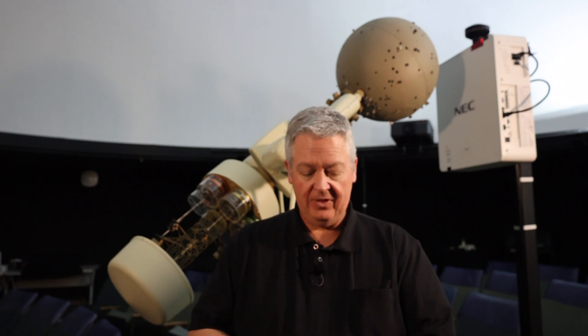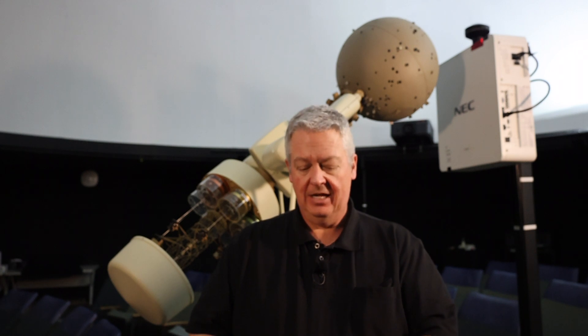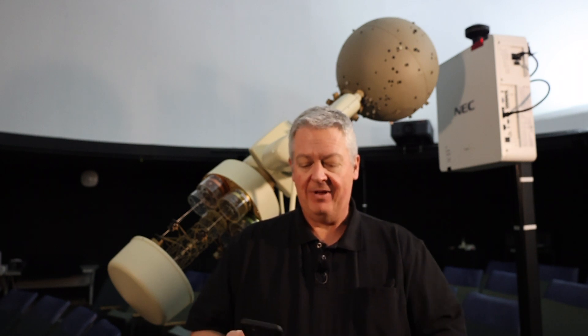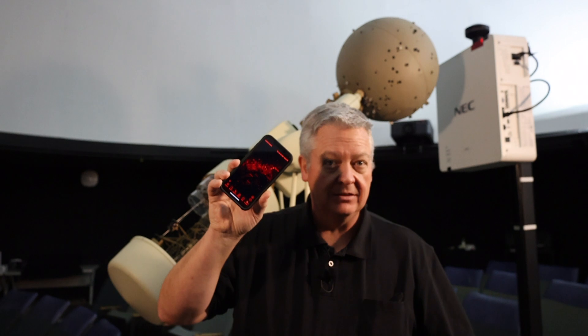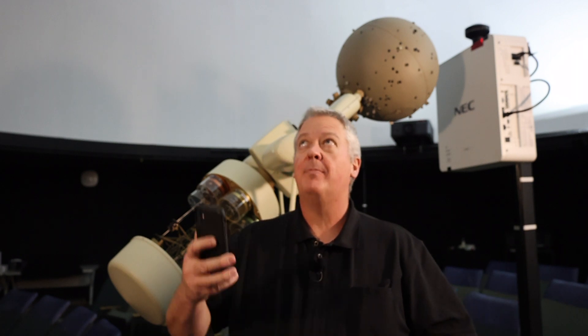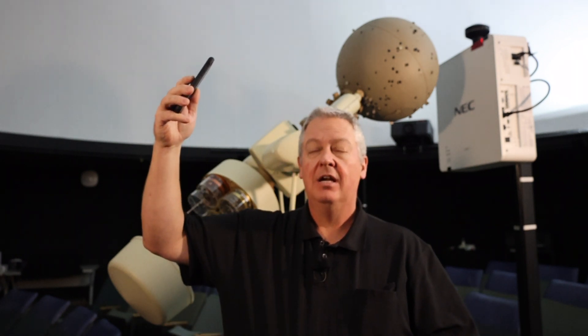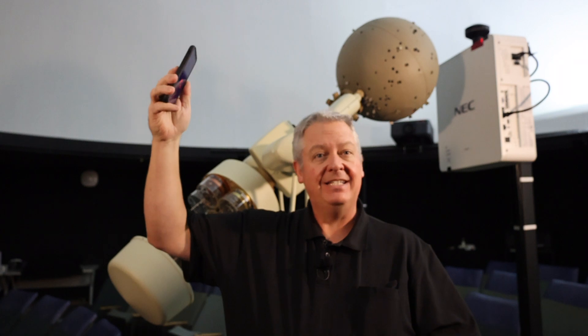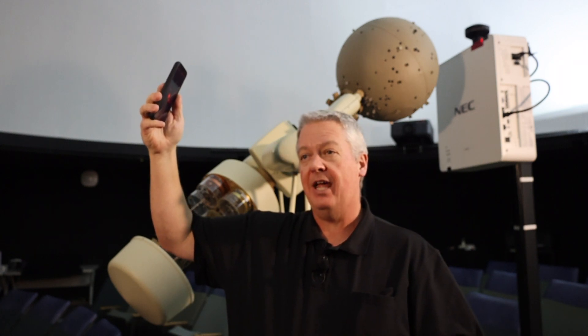Now I can already hear some of you thinking, why would I want this? I have an app for this on my phone. So do I. But I find that the planisphere makes it easier for me to find a constellation if I want to go and look for that constellation. Whereas if I just want to look up at the sky and see what's up there, I use my app. That's easier because I can move it around and it'll show me exactly what I'm looking at.